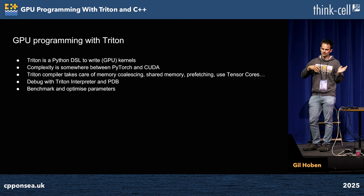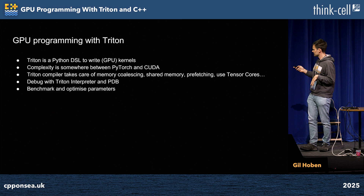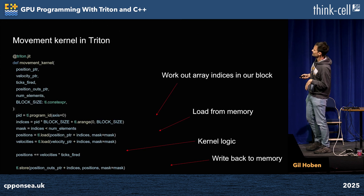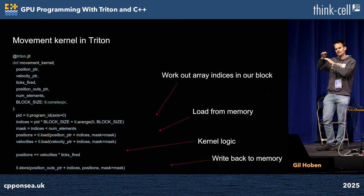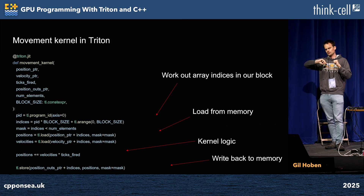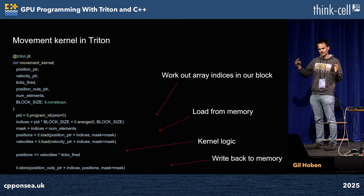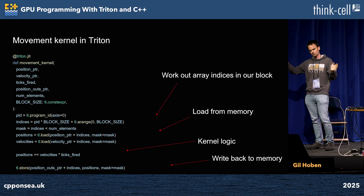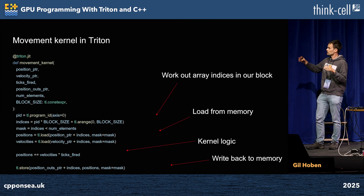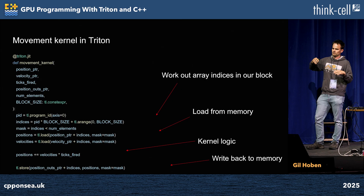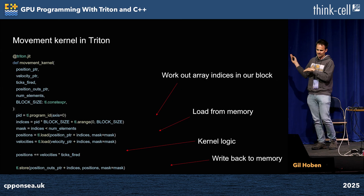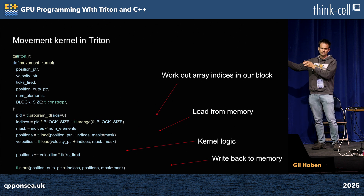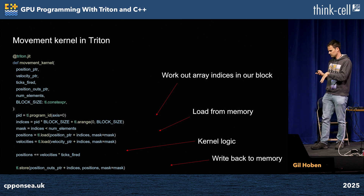This is kind of how it looks. You have a Python function — essentially programs launched independently, or at least that's the programming model. Each program has responsibility for a certain block size. You load the data from memory — say, high-bandwidth memory in your GPU — then you perform some kernel logic, similar to the C++ code we saw, basically just doing an update of positions. Then you write it back to memory.